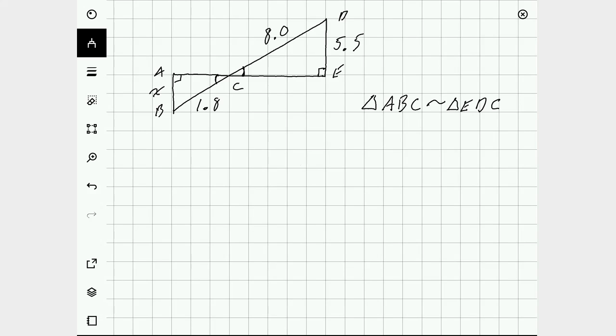All right, so let's go ahead and fill in some measurements. Let's say that we know that the side between B and C measures 1.8, and then from C to D measures 8.0. Between D and E measures 5.5, which tells me that this drawing is not really drawn to scale, but that's okay. And then between A and B is the thing we're looking for.